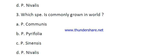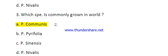Question number three: which species is commonly grown in the world? Options are Pyrus communis, Pyrus pyrifolia, Pyrus sinensis, and Pyrus nivalis. The right answer is Pyrus communis, and this is generally known as the European pear or common pear.